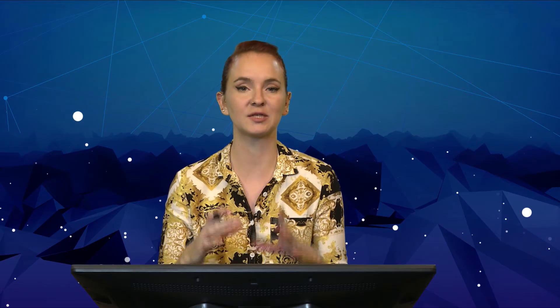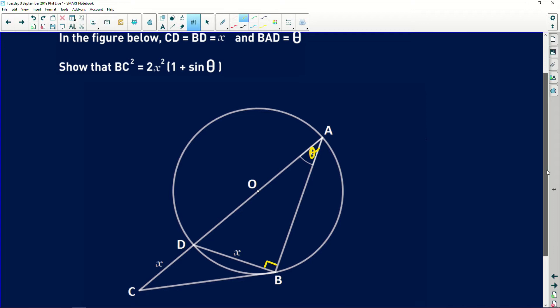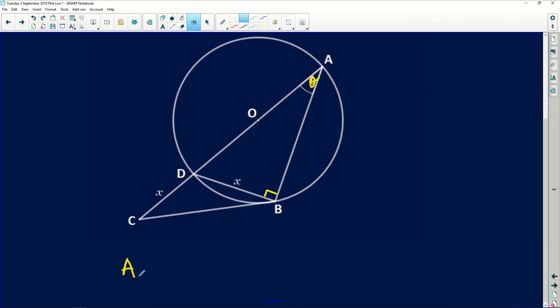So the moment you get a question like this and you see a circle, I don't care if it's a trig question, guys. Circle means Euclidean theory. Please apply your Euclidean. So let's look at this. We have AD is a diameter. So that angle ABD is a 90 degree angle. Why? Angle in a semi circle.